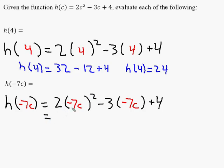So here I'm going to have negative 7 squared. Remember that that's negative 7 times negative 7, which is 49. 49 times 2 is 98. The c is being squared. I have negative 3 times negative 7, which is 21, which is being multiplied by c. And I have the plus 4.